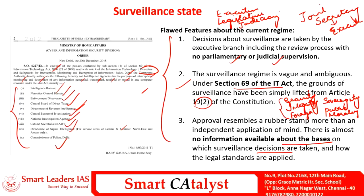Apart from being a burning issue for personal liberty, this area has probability of being asked in GS2 under the Indian polity area, in GS3 under national security, cyber security and recent government actions curtailing dangers to national security, and in GS4 where violation of individual autonomy and privacy becomes an ethical question. So we might expect questions in this area from three GS papers: GS2, GS3 and GS4.